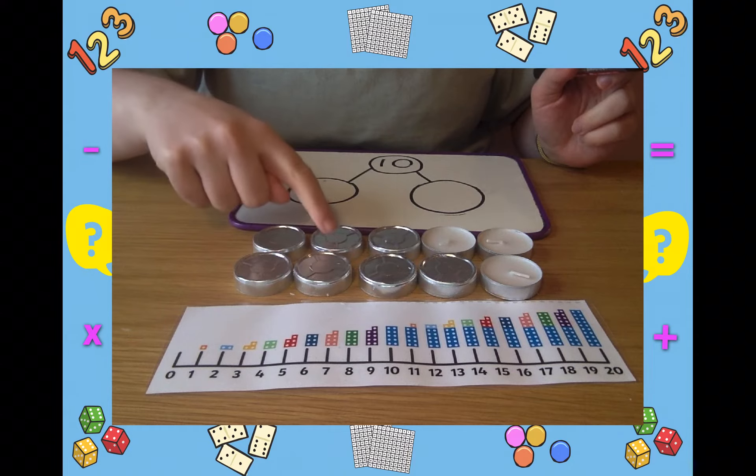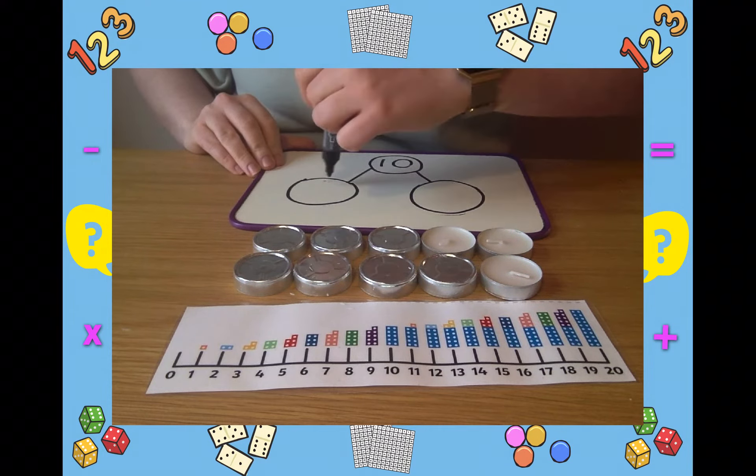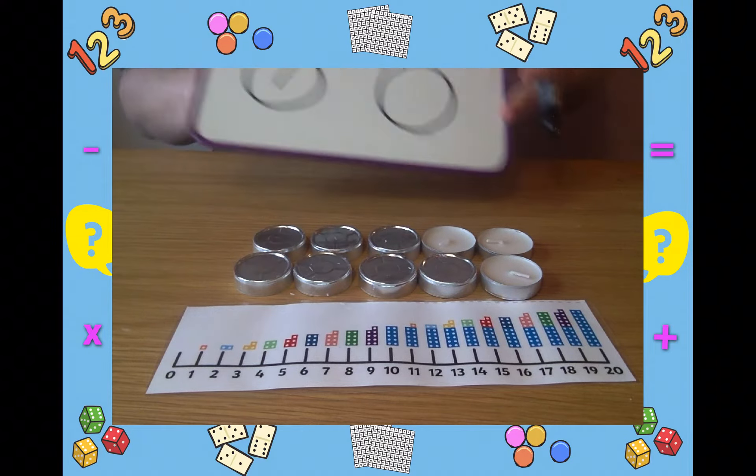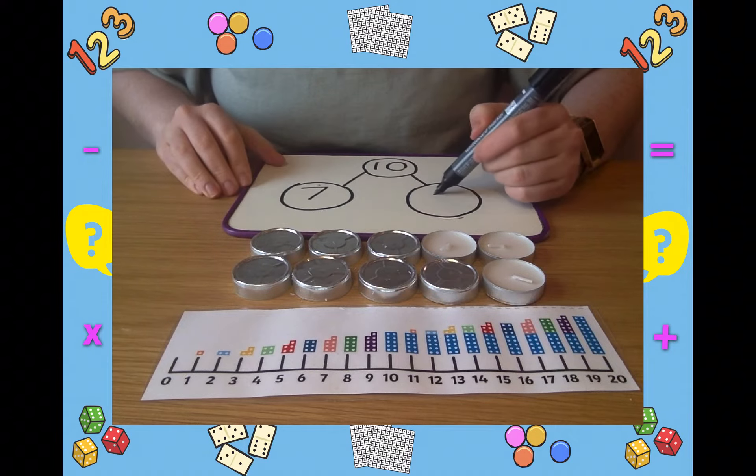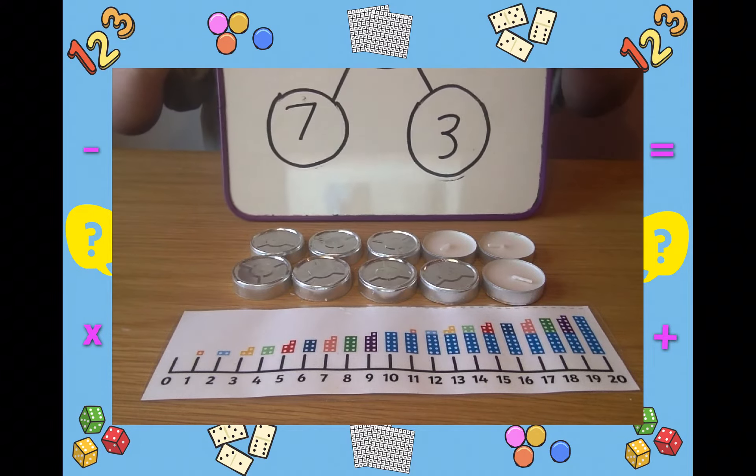Let's see. 1, 2, 3, 4, 5, 6, 7 of them are silver. Drawing upside down. 7 is really hard. There we go. And 1, 2, 3 of them are white. Must be 7 and 3. Is that what you got as well?